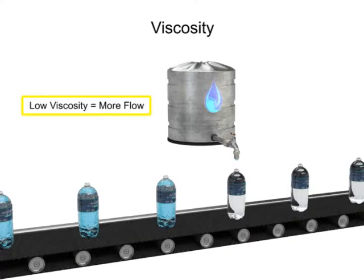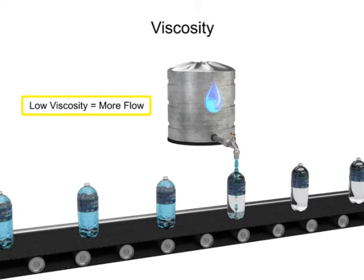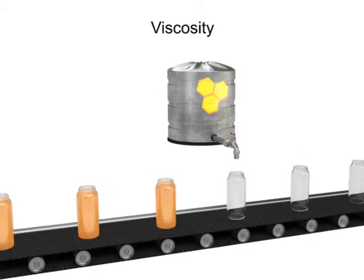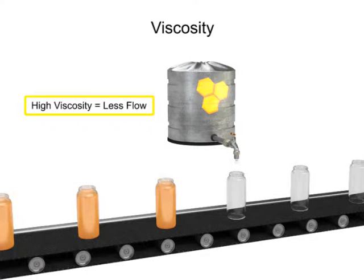Fluids with low viscosity flow very easily. Water is a type of fluid with low viscosity. Fluids with high viscosity are more resistant to flow. Honey is a type of fluid with a high viscosity. Therefore, honey is more viscous than water.